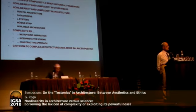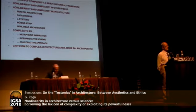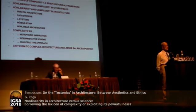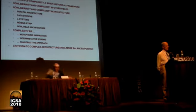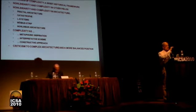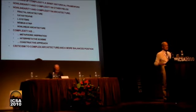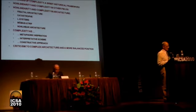Here is an outline of my talk: a brief historical framework about the sciences of complexity, how they developed in other fields and how non-linearity and complexity were addressed in architecture from different points of view, the role played by complexity today in architecture, some criticism to the so-called complex architecture, and an attempt to propose a more balanced position which also aims at fulfilling the ethical problems which are in the background of this symposium.